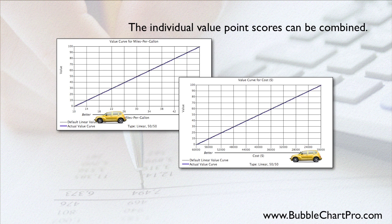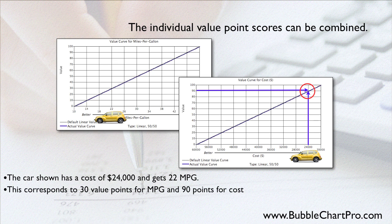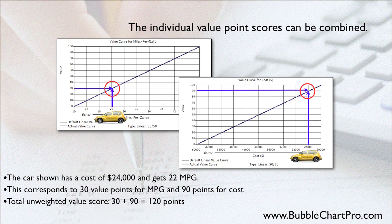When you're comparing cars, you consider only cars somewhere between your attribute limitations, that is, between your best and worst outcomes. The car in these charts has a cost of $24,000 and gets 22 miles per gallon. Since a cost of $24,000 corresponds to an attractiveness value of 90, and 22 miles per gallon corresponds to an attractiveness value of 30, the unweighted combined overall attractiveness score for this car is 120. However, scoring attractiveness in this way assumes that both attributes are equally important. In most cases, this isn't true.